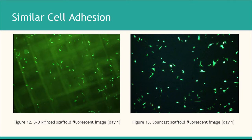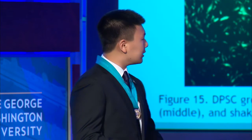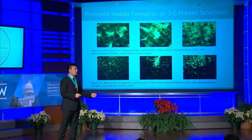After seven days of cell growth, fluorescent microscopy revealed nodule formation in many of our samples, which indicates an early sign of osteogenic differentiation. The top row shows 3D printed scaffold samples and the bottom row shows spun cast samples. In the first column, samples without dexamethasone show nodule formation only on the 3D printed scaffold. In the middle column, both scaffolds treated with dexamethasone show nodule formation, consistent with previous research. The third column shows samples on the rocking shaker without dexamethasone, where an increase in proliferation rate is observed.